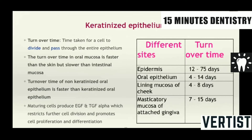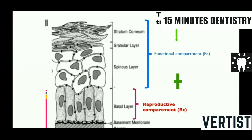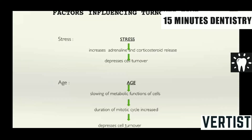Turnover time in the oral mucosa is faster than the skin but slower than the intestinal mucosa. The turnover time of non-keratinized oral epithelium is much faster than the keratinized oral epithelium. In oral epithelium it is about 14 days, epidermis 12 to 75 days, masticating mucosa is 7 to 15 days. In turnover time, there are two components: the functional compartment and the productive compartment. The productive compartment consists of the basal layer and the functional compartment consists of the spinous layer, the granular and the stratum cornea.